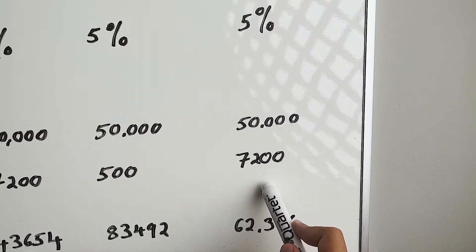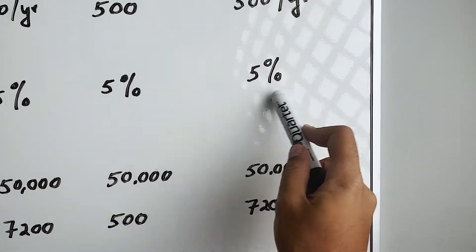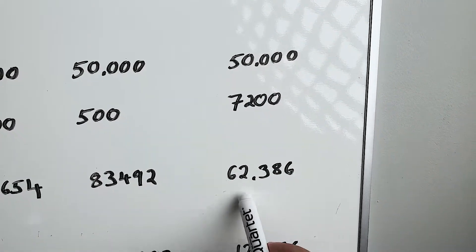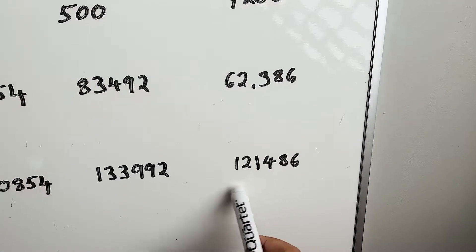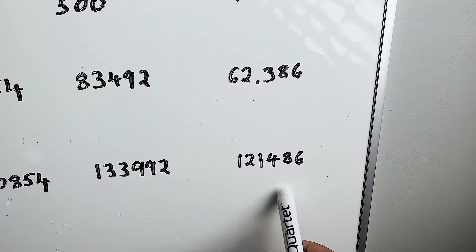When the kid turns 19, at 5% annual return, this investment can bring us $62,386 and our total RESP will have a balance of $121,486.